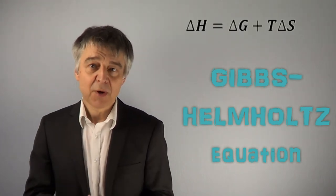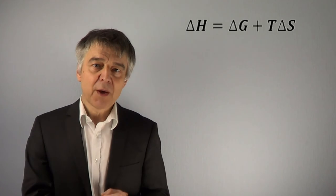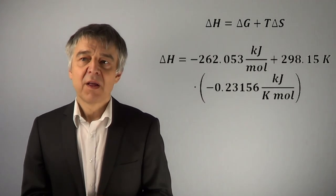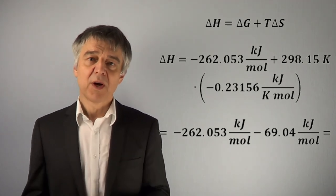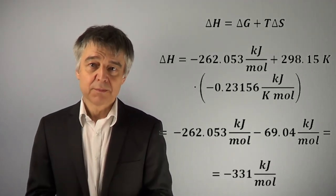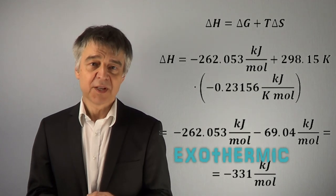From Gibbs free energy and entropy, enthalpy can be calculated by the Gibbs-Helmholtz equation. Here we determine an enthalpy of -331 kJ/mol, an exothermic process.